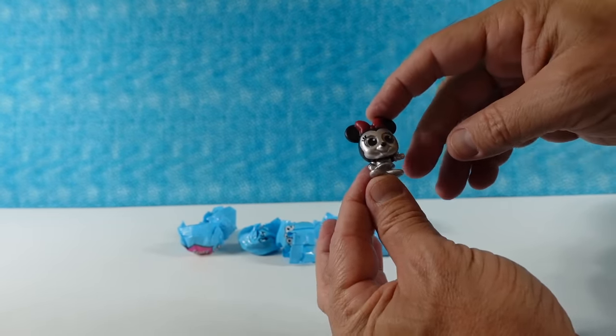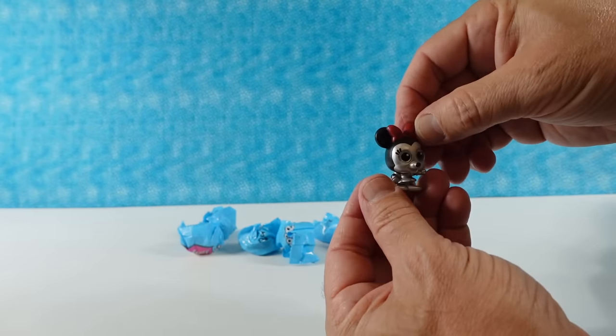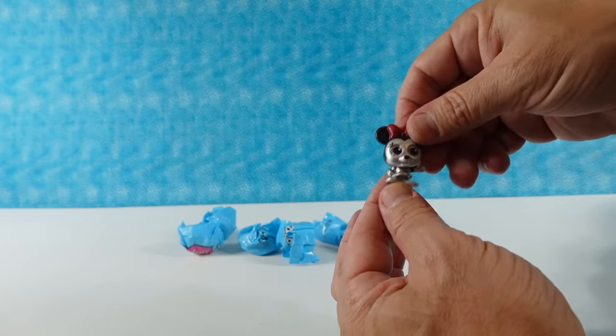Oh, I have special edition Minnie. Nice. So this is part of the Disney 100 celebration. They are like pearlescent silver figures. There's Minnie with her big red bow.